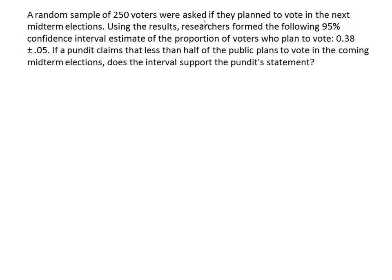A random sample of 250 voters were asked if they planned to vote in the next midterm elections. Using the results, researchers formed a 95% confidence interval estimate. They tell us that the sample proportion was 38% and a margin of error of plus or minus 5%. They're giving us the confidence interval already — not asking us to construct one.